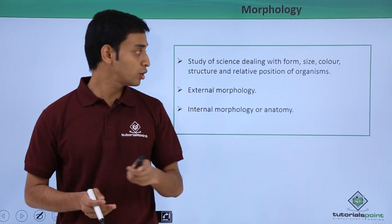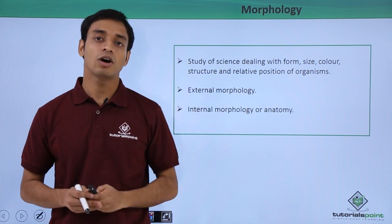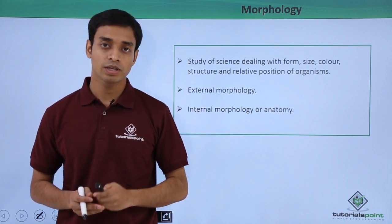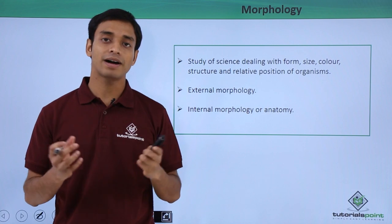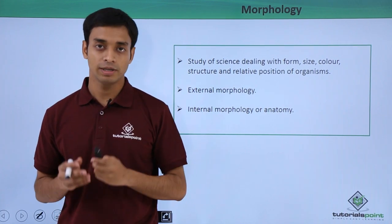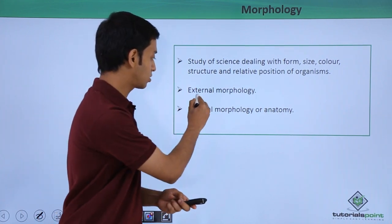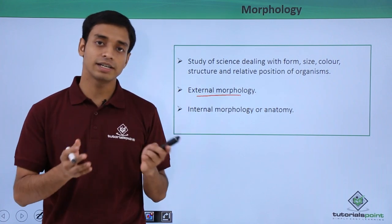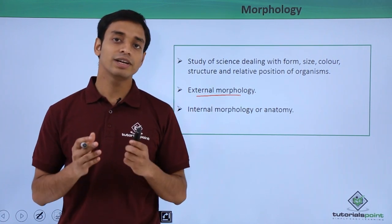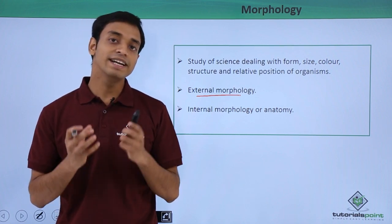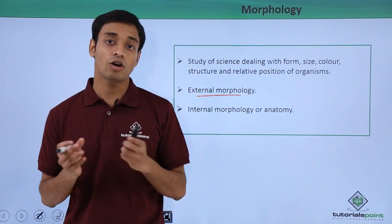These observable characteristics — such as size, color, and external features of an organism — are included in morphology. When we are studying the external parts or external morphology of a particular organism, this study is known as external morphology.